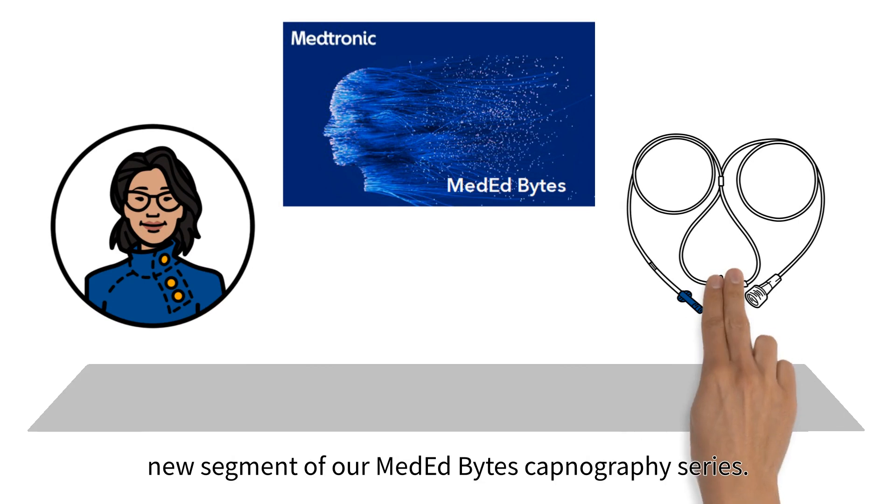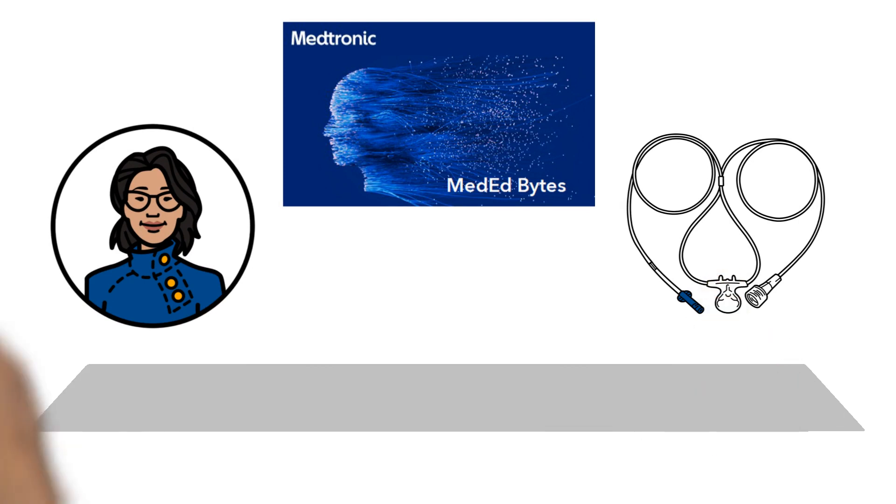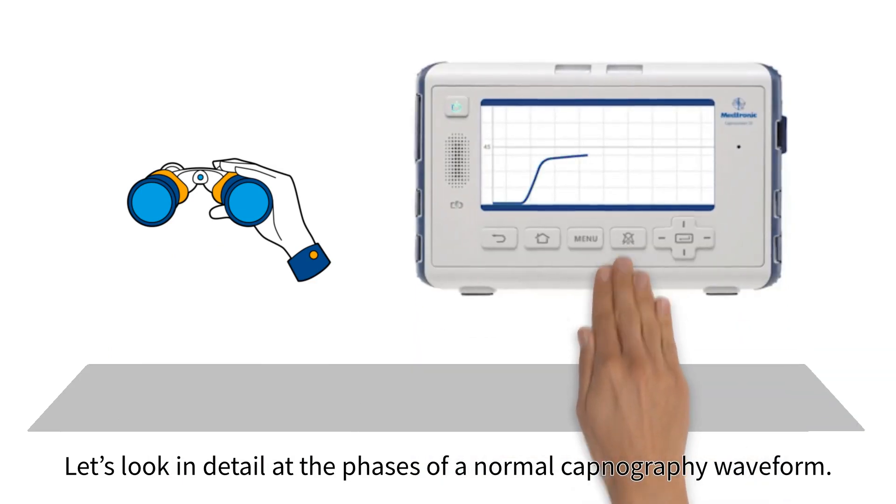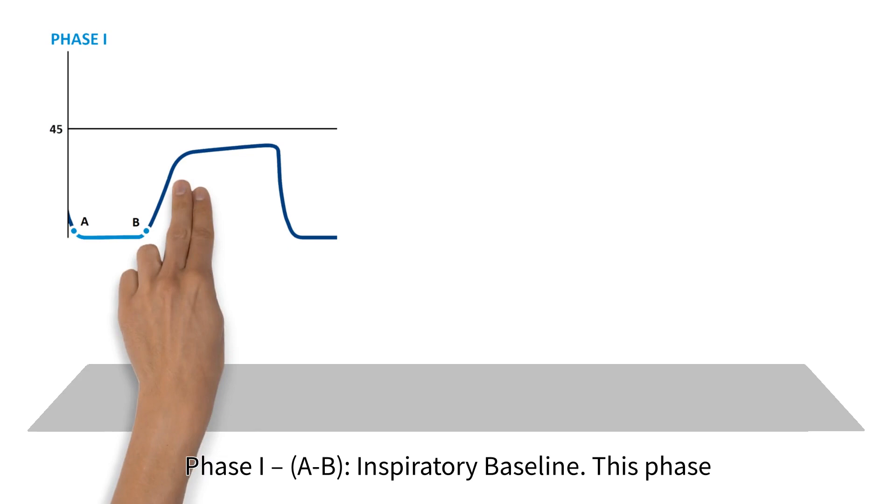Let's look in detail at the phases of a normal capnography waveform. Phase one, A to B, inspiratory baseline.